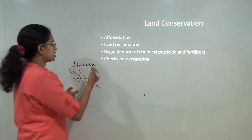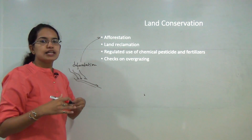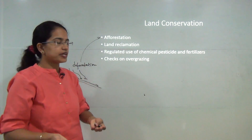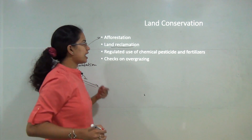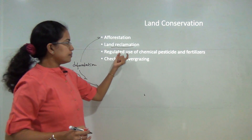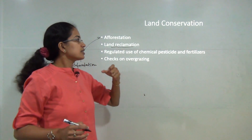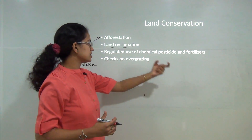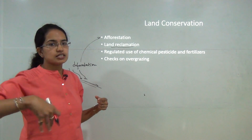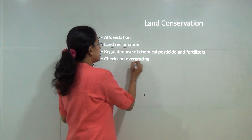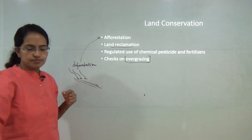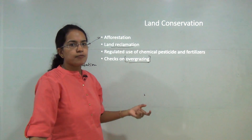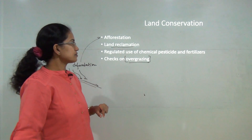For land degradation, land reclamation is important. The use of chemically made pesticides and fertilizers should be regulated. Overgrazing by animals should be checked, as it leads to barren lands. These are the key threats to land - deforestation, degradation, erosion - and their conservation measures.